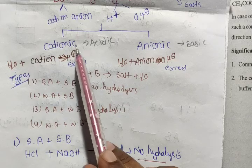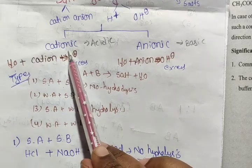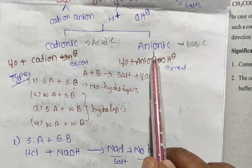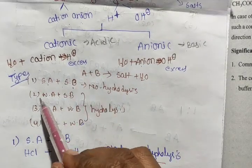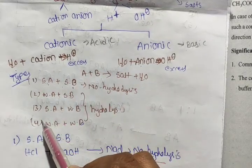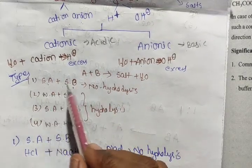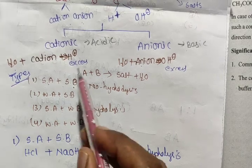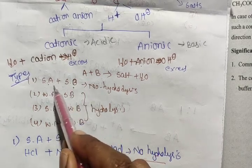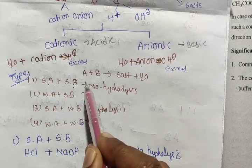Hydrolysis is of two types: cationic and anionic hydrolysis. There are four types of salt hydrolysis based on the combination of strong or weak acid and base. Here is the combination of acid, base, and salt.